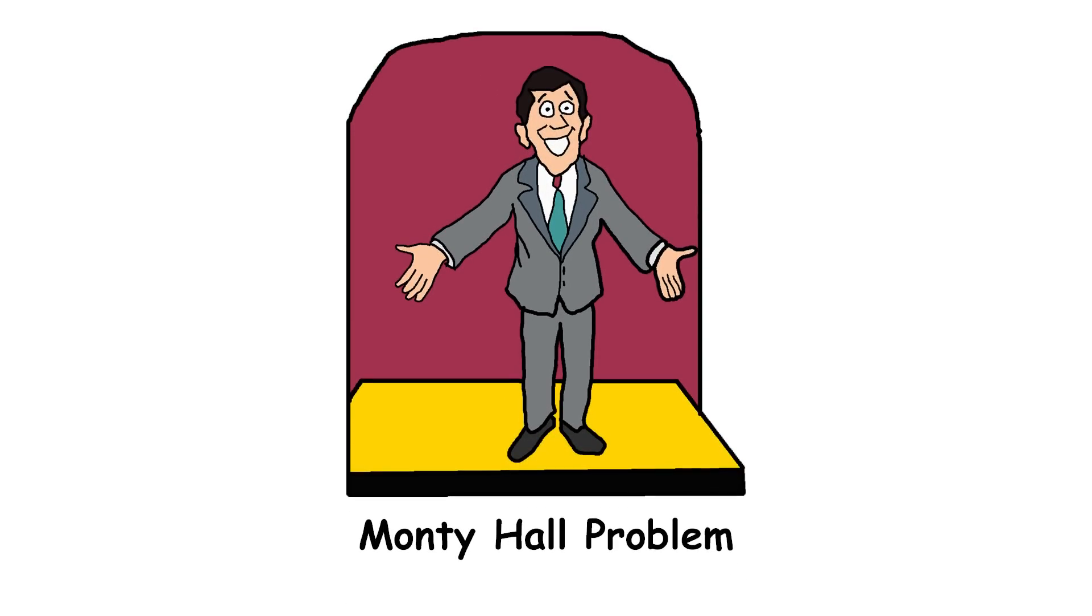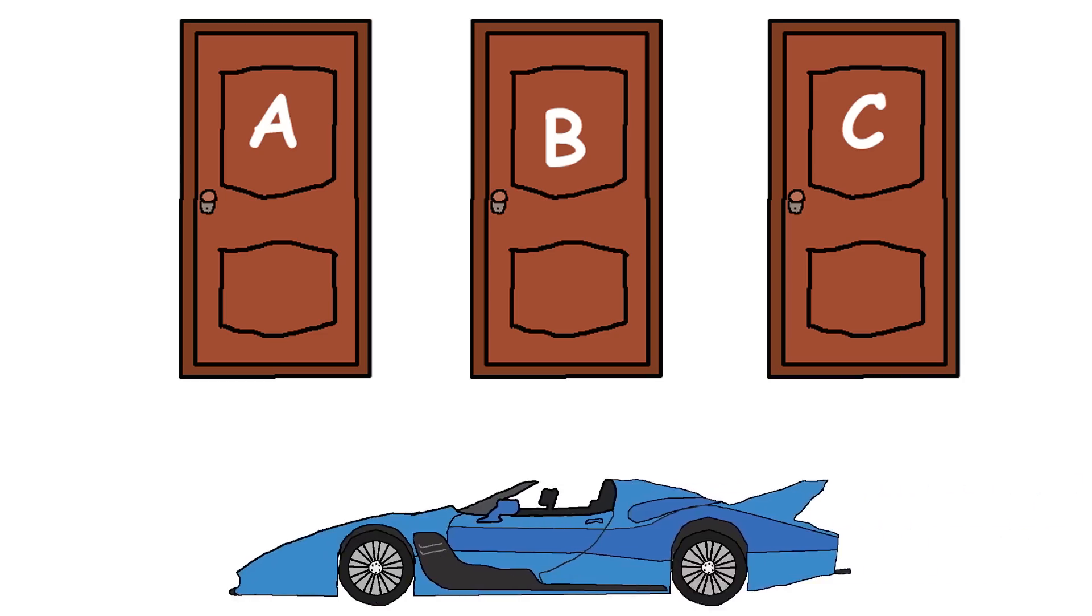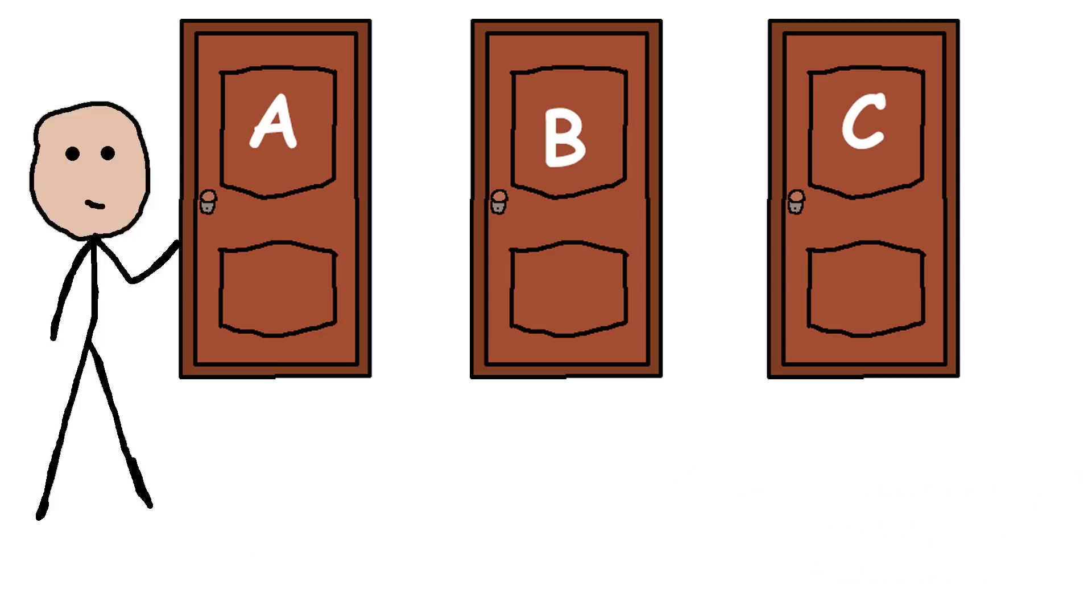The Monty Hall Problem. You're on a game show, and there are three doors. Behind one door is your dream car, and behind the other two are goats. You pick a door, let's say door A.